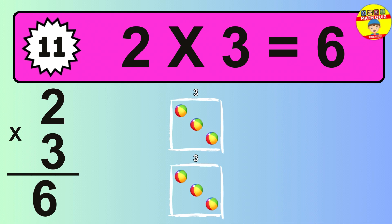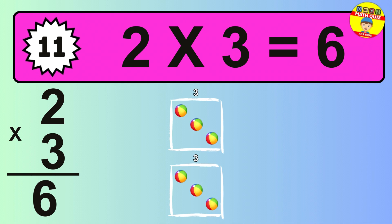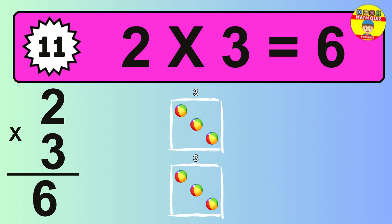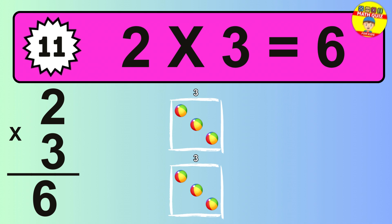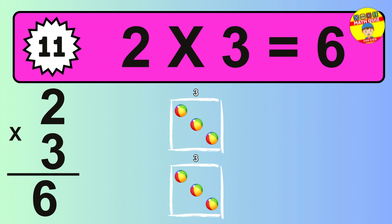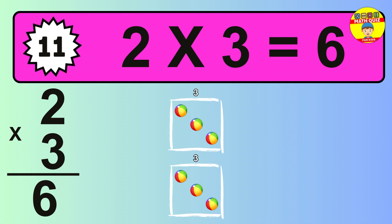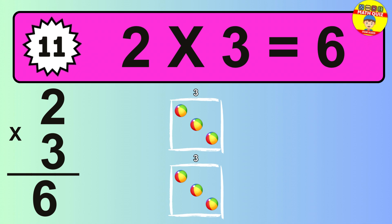The answer is 2 times 3 is 6. To calculate, we have 2 groups with 3 balls each one. So how many balls do we have? 6 balls.